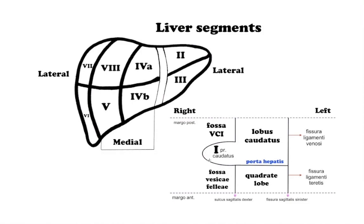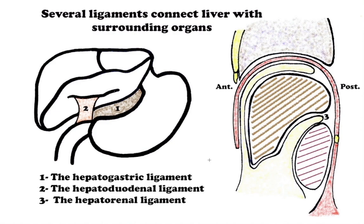Several ligaments connect the liver with surrounding organs. The hepatogastric ligament connects the liver to the lesser curvature of the stomach. The hepatoduodenal ligament is a distal portion of the lesser omentum that connects the liver to the cranial part of the duodenum. The hepatorenal ligament is a fold of peritoneum that extends from the lower posterior surface of the liver to the anterior surface of the right kidney.